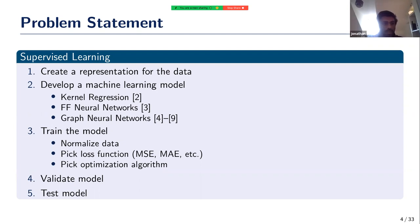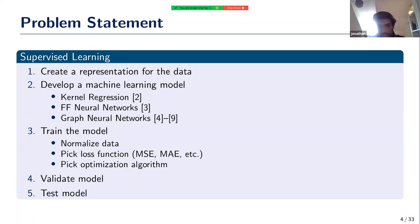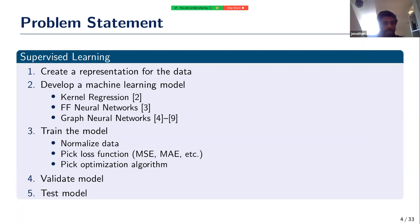Graphs are a very convenient way to encode the structure of crystals and molecules. Then we train the model — this usually involves normalizing data, picking a loss function like mean squared error or mean absolute error for a regression task. Finally we pick an optimization algorithm, train, then validate, and the model which performs best on the validation set is applied to the test set, and that final accuracy is what we report.